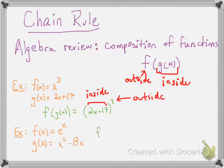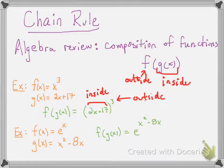In the next example we'll take a look at e to the x and x squared minus 8x. Now for f of g of x, again you're going to take g of x and plug it in for x into the function f. When you do that you get e to the x squared minus 8x. So the inside function is really the thing up in the exponent of e to the x.